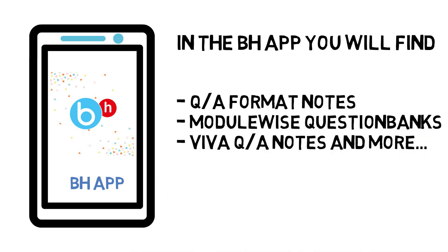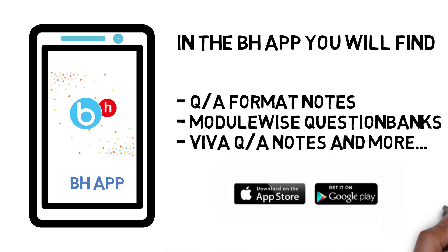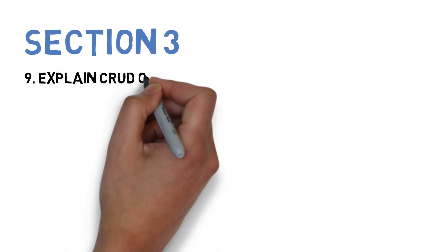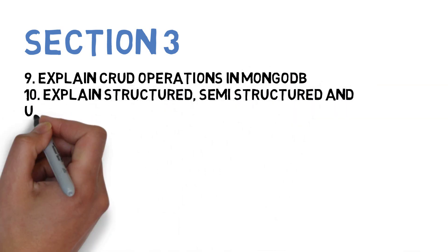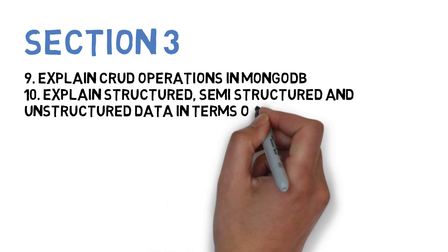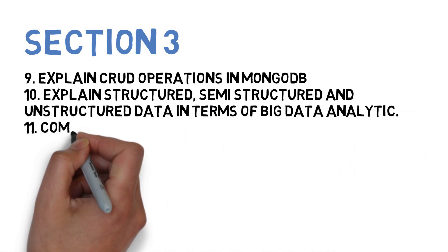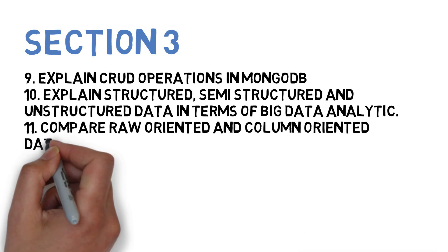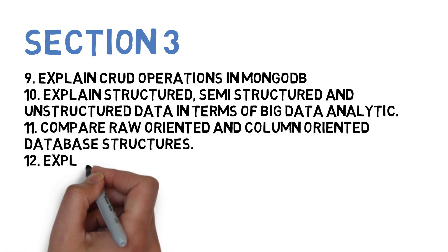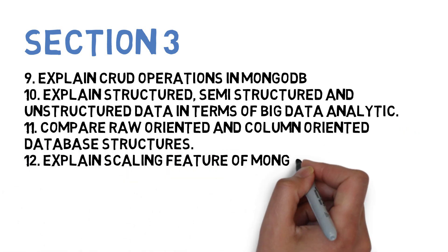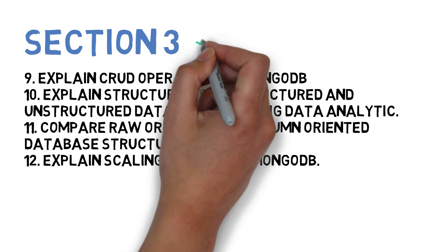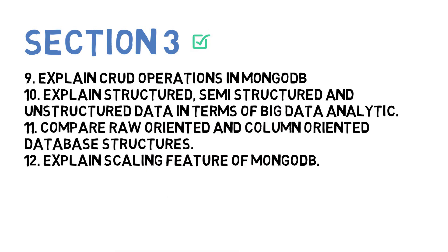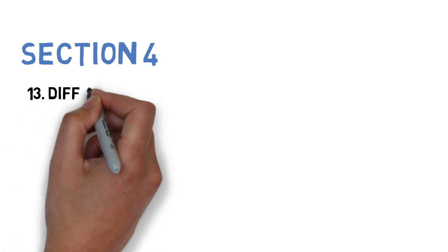Without wasting any time, section 3 — the first question is explain CRUD operations in MongoDB. Next is explain structured, unstructured, and semi-structured data in terms of big data analytics. Next is compare row-oriented and column-oriented databases. And the last question is explain the scaling feature of MongoDB. These 4 questions are for section 3, and we now have 12 questions finished.